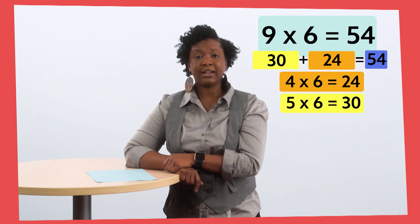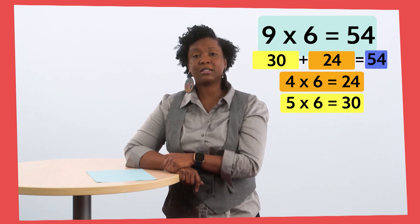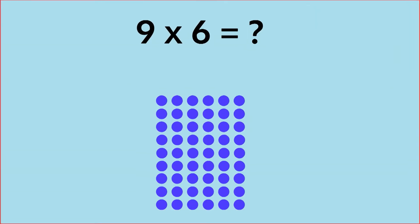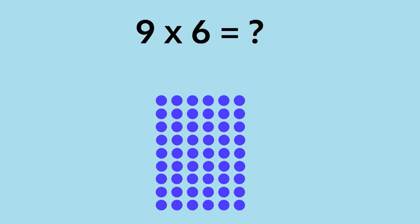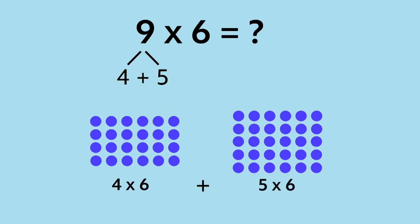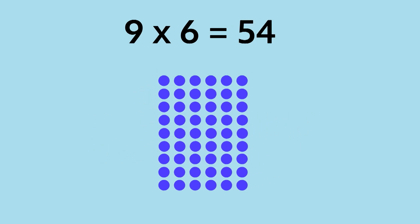Decomposing the factor of nine into five plus four helped us think through this problem. Let's take another look using an array to solve nine times six. To solve nine times six, we broke the factor nine apart into four and five — or four times six plus five times six. Four times six equals 24, five times six equals 30, so nine times six equals 54.